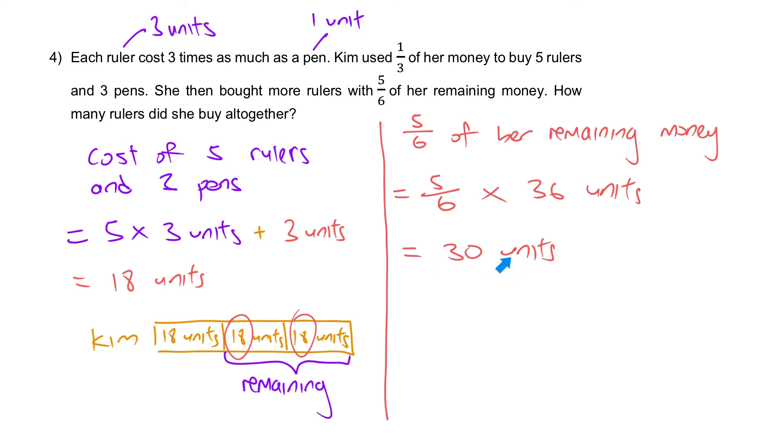How many rulers can you buy with 30 units? Remember, one ruler costs three units. 30 units? Well, 10 rulers.